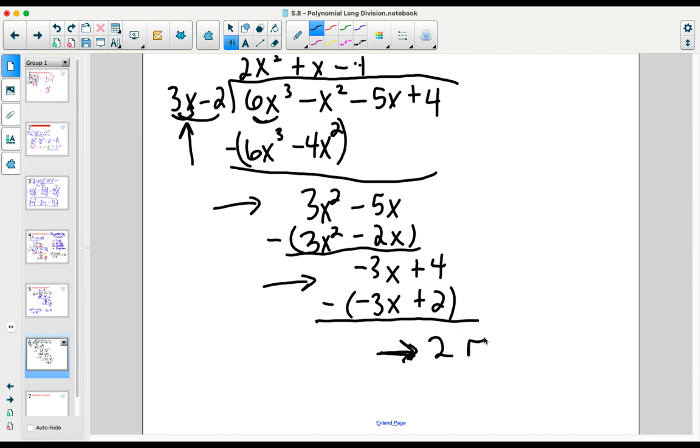So, 2 as the leftover amount will serve as our remainder. Now, writing out this solution is a little bit tricky. We know that this trinomial up here would be our quotient, but we also have this extra concern of the remainder.